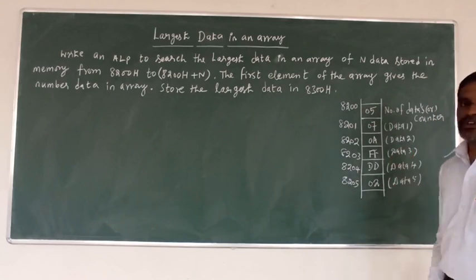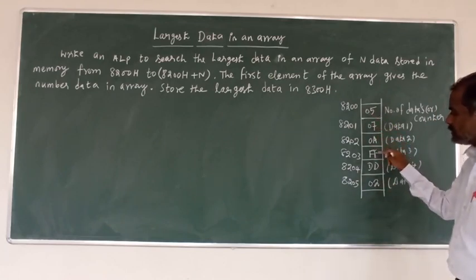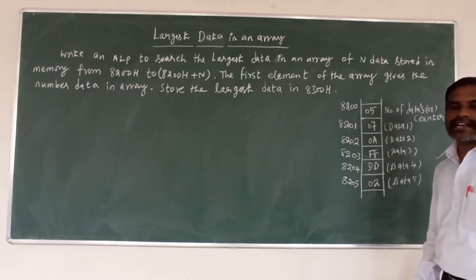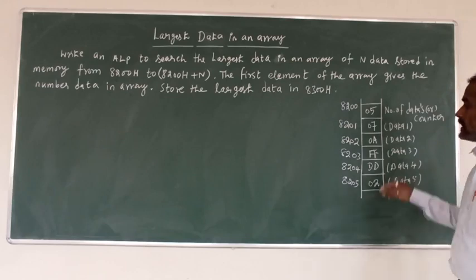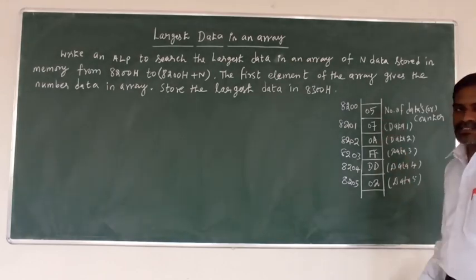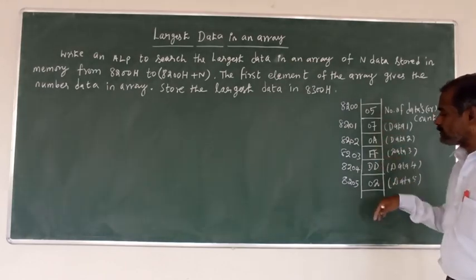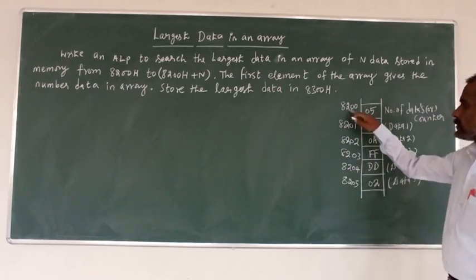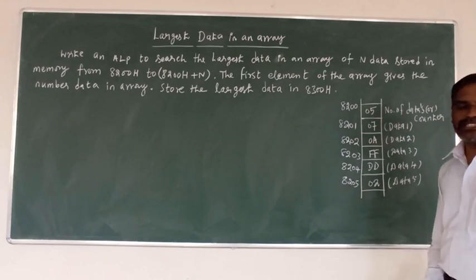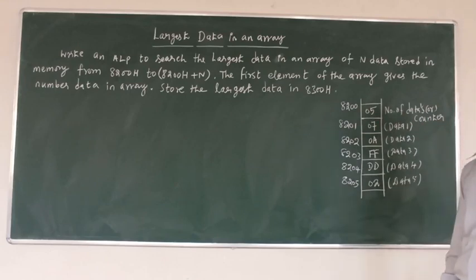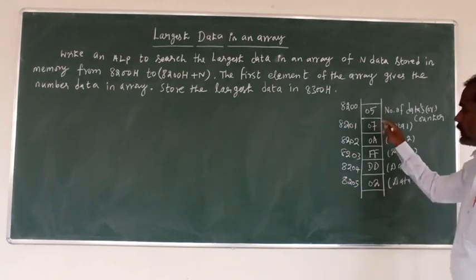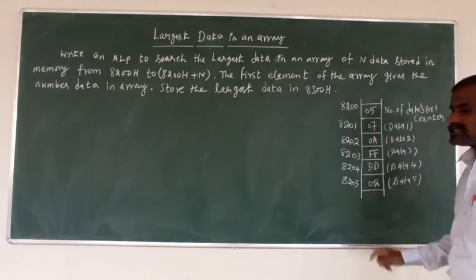The first memory address location 8200 holds the number of data. For example, if it contains 05, that means 1, 2, 3, 4, 5 data. Suppose here 0A - 0A means the corresponding decimal value 10, so we have 10 data and we find the largest. Suppose 8200 contains 64H - that means 100 in decimal, so we have 100 data and we find the largest.